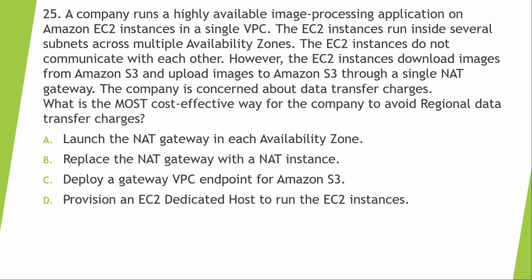A company runs a highly available image processing application on EC2 instances in a single VPC across multiple AZs. The EC2 instances download and upload images to S3 through a single NAT gateway. The company is concerned about data transfer charges. To avoid regional data transfer costs, deploy a VPC gateway endpoint for S3, so data transfers through the AWS network only without incurring extra charges. That is the most cost-effective solution.